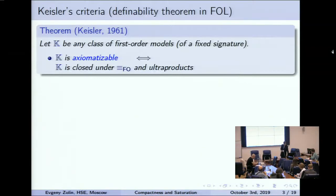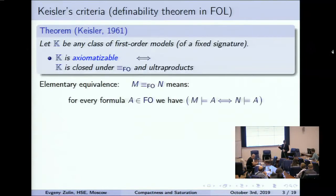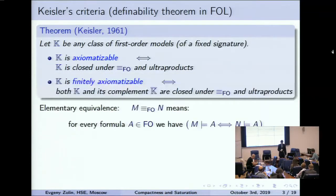Let us first recall one of the most prominent results in logic: Keisler's definability theorem. Let K be a class of first-order models in some fixed signature. Then it is axiomatizable — definable by some set of first-order formulas — if and only if it is closed under elementary equivalence and ultraproducts. A class is finitely axiomatizable if and only if both K and its complement are closed under elementary equivalence and ultraproducts.